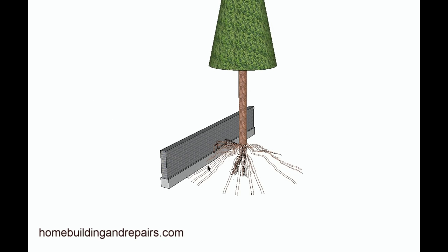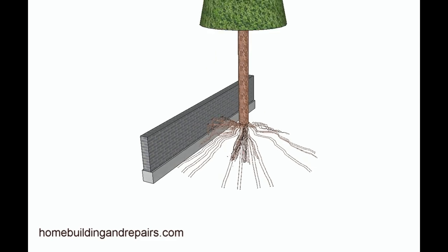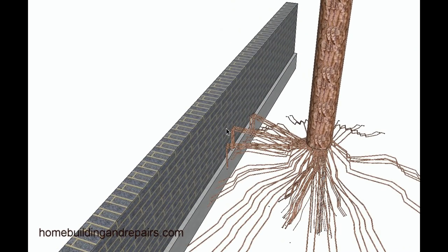Once we remove the soil, we can actually see where the roots are starting to go underneath the retaining wall. They can actually lift the retaining wall up, and then we have roots that are starting to put pressure on the retaining wall, and this will force the retaining wall over.